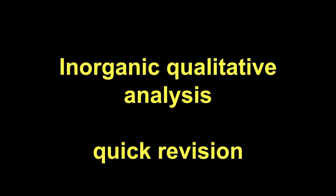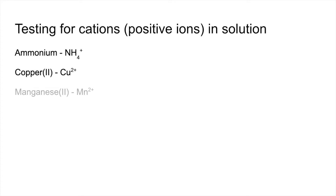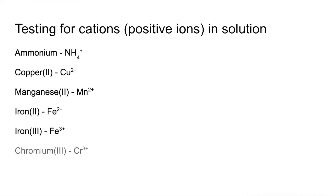Quick revision video on inorganic qualitative analysis. We'll start with the positive ions — the cations. We're looking at ammonium, copper-2, manganese-2, iron-2, iron-3, and chromium-3. When we're finished with these, we'll look at the negative ions.